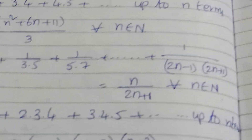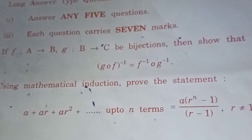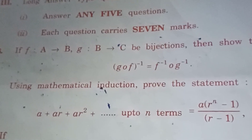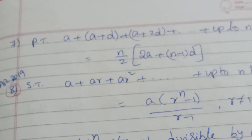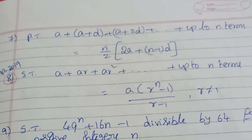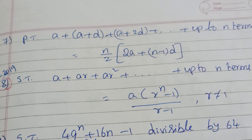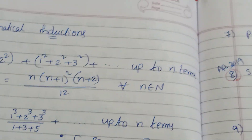Now let's go to the next question. This question is from March 2020: a plus ar plus ar squared. The same question appeared in April 2019. Next question is also April 2019. You can check these questions from April 2019.